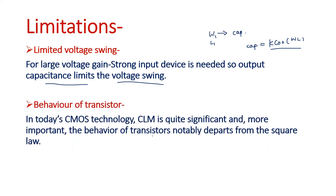In today's technology, we cannot ignore the Channel Length Modulation (CLM) effect. If CLM is considered, a complex formulation results. Due to CLM, looking at the current equation, one extra term comes into the picture: (1 + lambda·Vds). This term departs the current equation away from square law, and square law is important here. Because if we take the square root of the current equation, we can recreate the overdrive voltage — this relates to the current mirroring action, which will be discussed later.